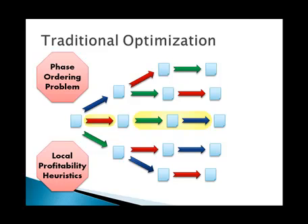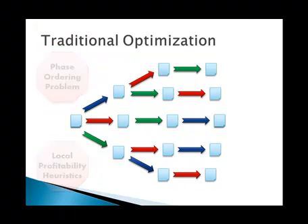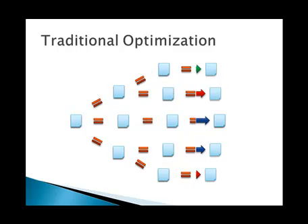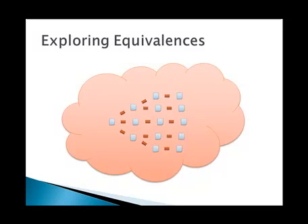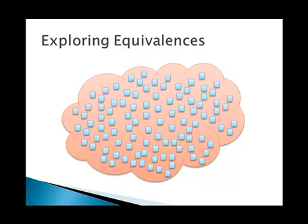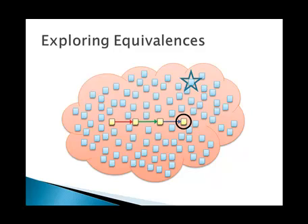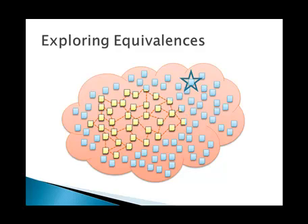In light of these problems, we have taken another perspective on optimization. What we realized is that each optimization is telling us that the original and transformed programs are all equivalent. Optimization, then, is in general an attempt to explore this huge space of equivalent programs, trying to find the optimal version. Traditional optimization explores a single path through this space, the end of the path being the transformed result. We have designed a new approach based on equalities, which allows us to efficiently explore an entire region of this space.